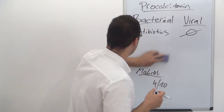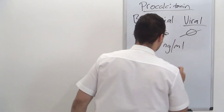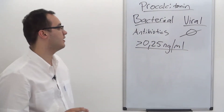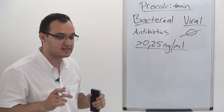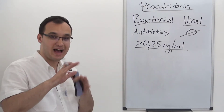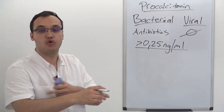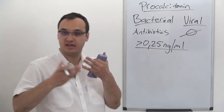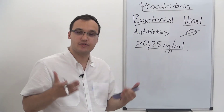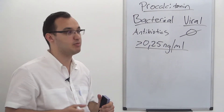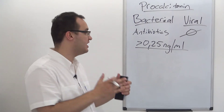What value are we looking for? When we have a procalcitonin level of more than 0.25 nanogram per milliliter, there is a higher likelihood of bacterial infection. However, procalcitonin can also be increased by other conditions — for example, recent surgery, recent burns, trauma, immunologic diseases like Kawasaki disease, fungal infections like Candida, or immunomodulatory drugs like rituximab or alemtuzumab. These can all cause an increase in procalcitonin level.